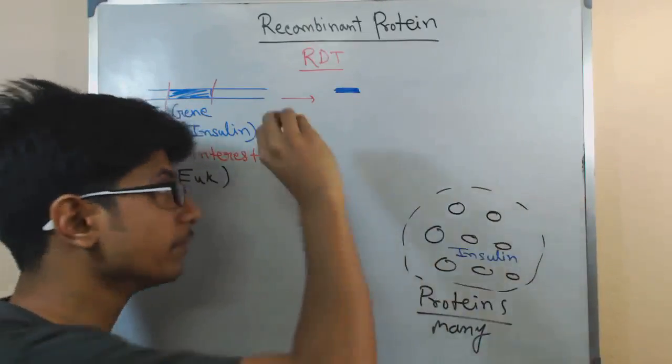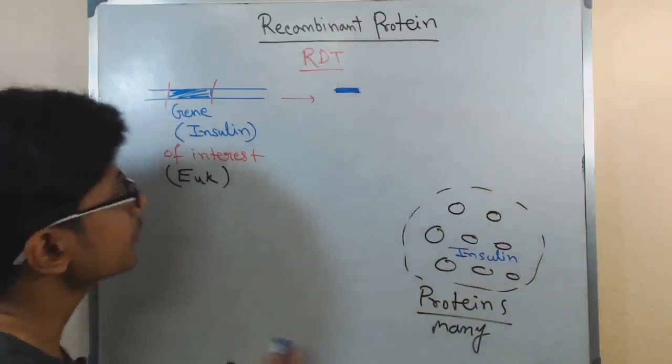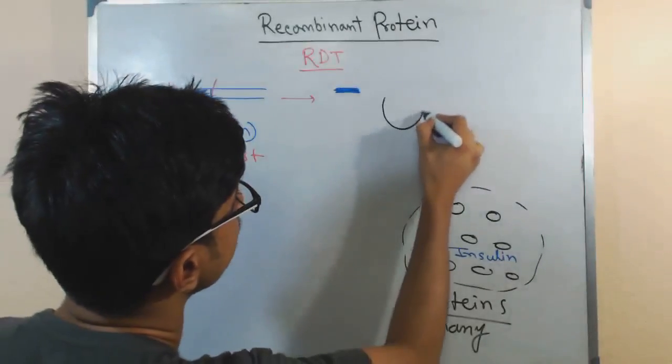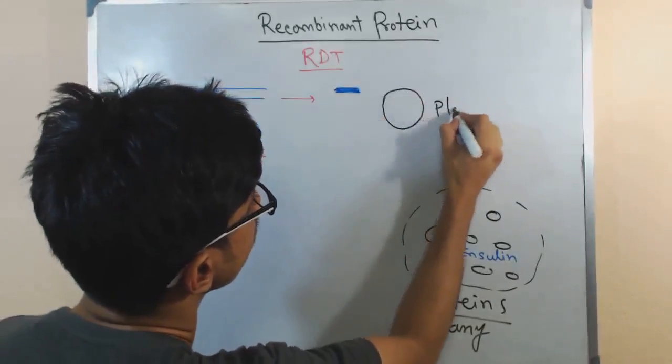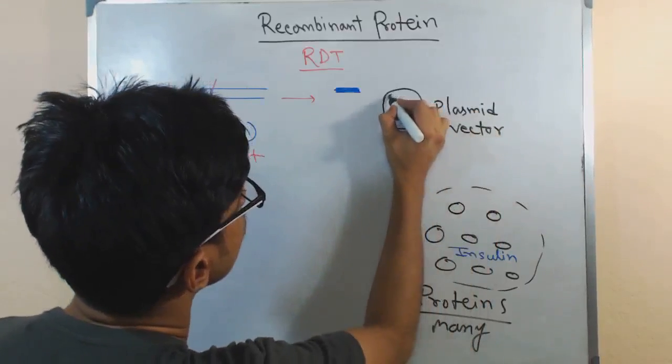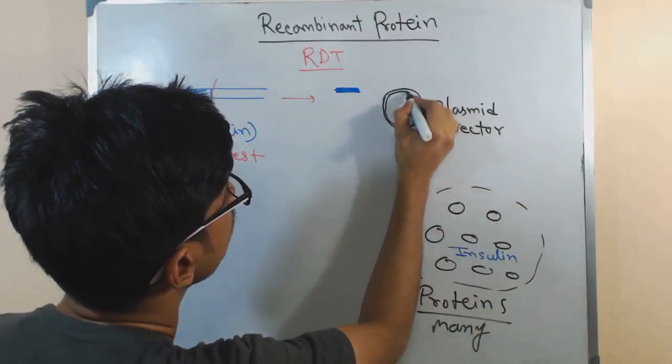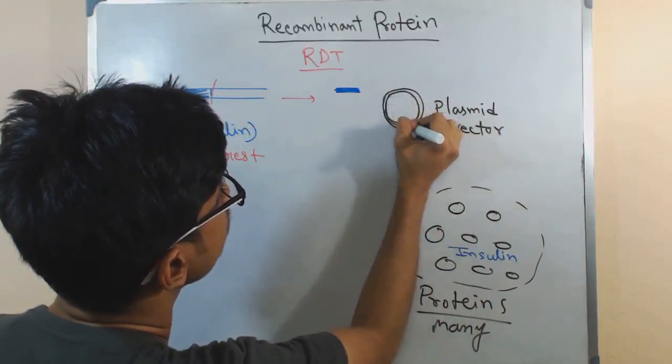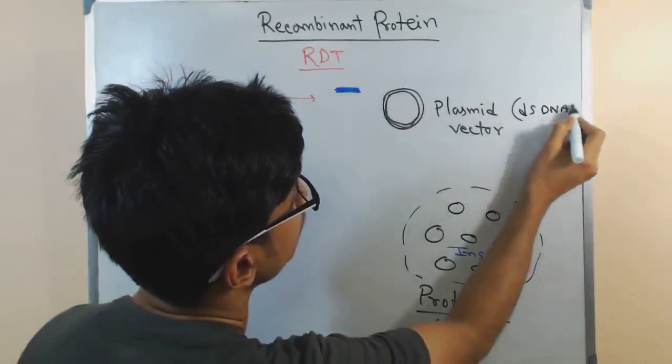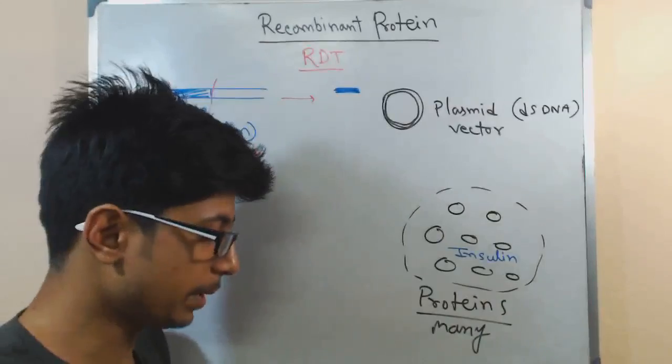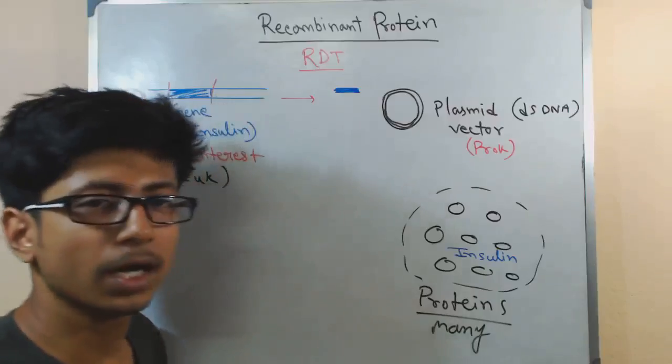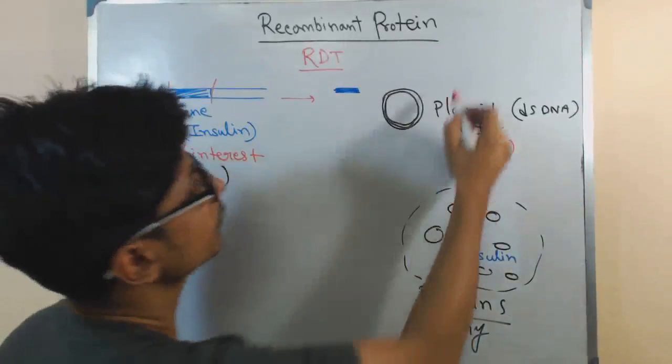The vector can migrate, the vector can move. Let's say the vector we use here is a plasmid, a plasmid vector. Plasmid is also a double-stranded DNA.